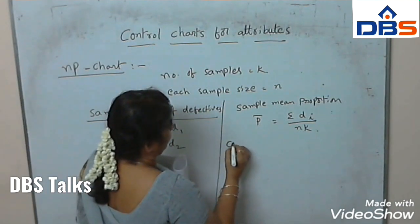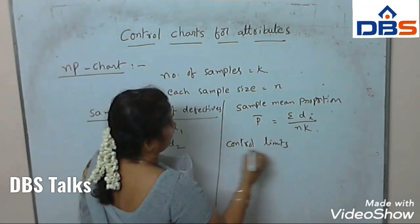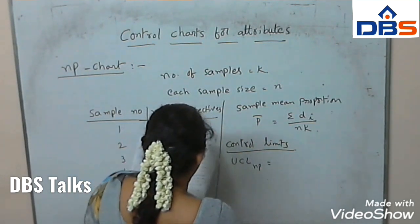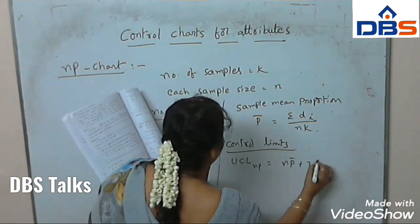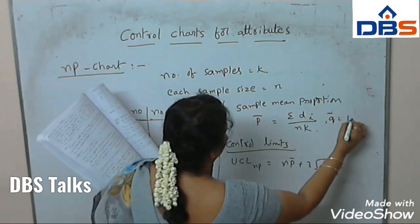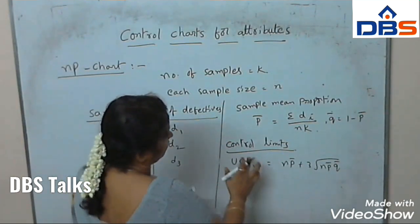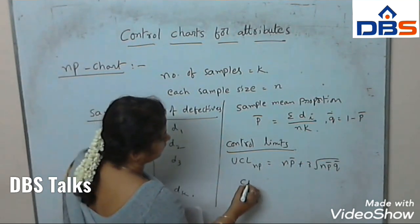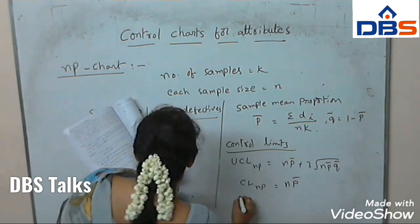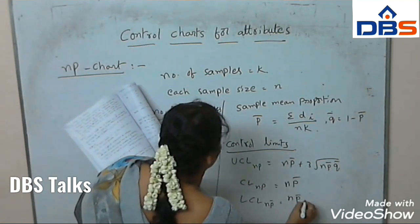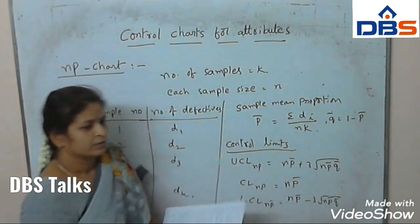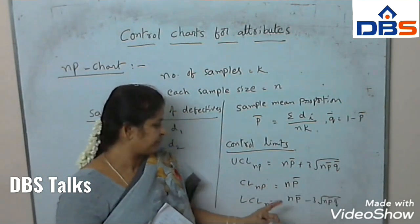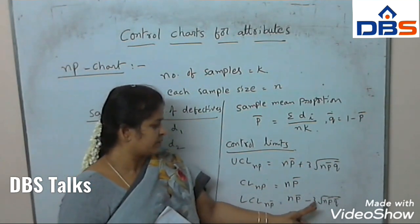What are the control limits for the NP chart? The upper control limit equals NP-bar plus 3 times the square root of N times P-bar times Q-bar, where Q-bar equals 1 minus P-bar. The central limit equals NP-bar. The lower control limit equals NP-bar minus 3 times the square root of N times P-bar times Q-bar.